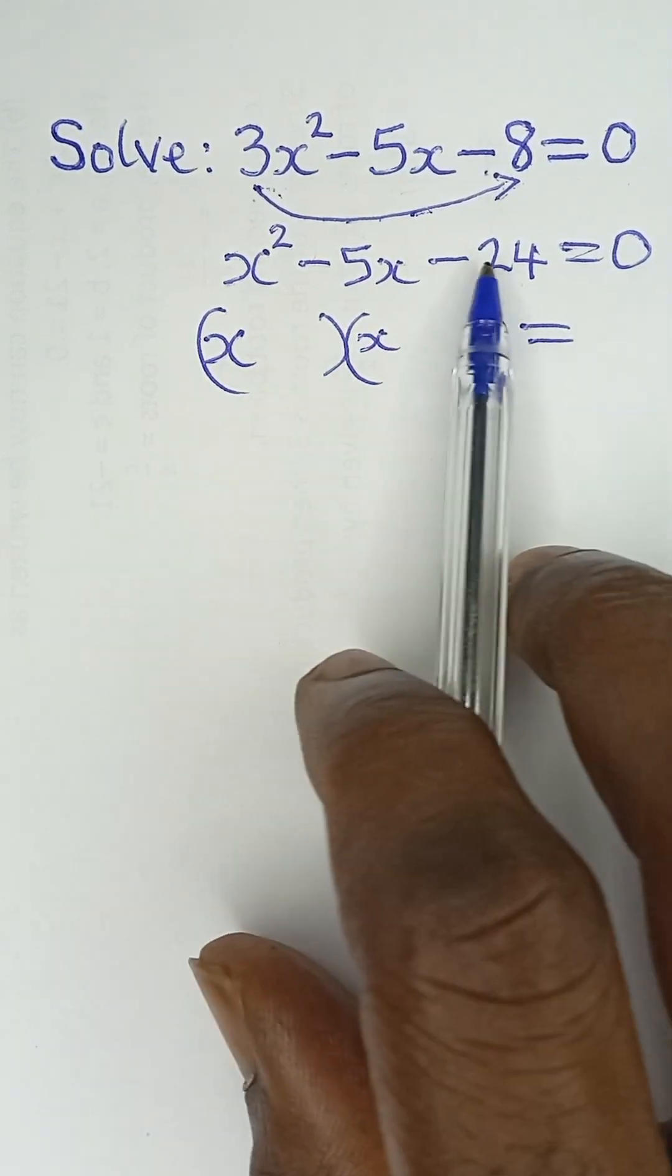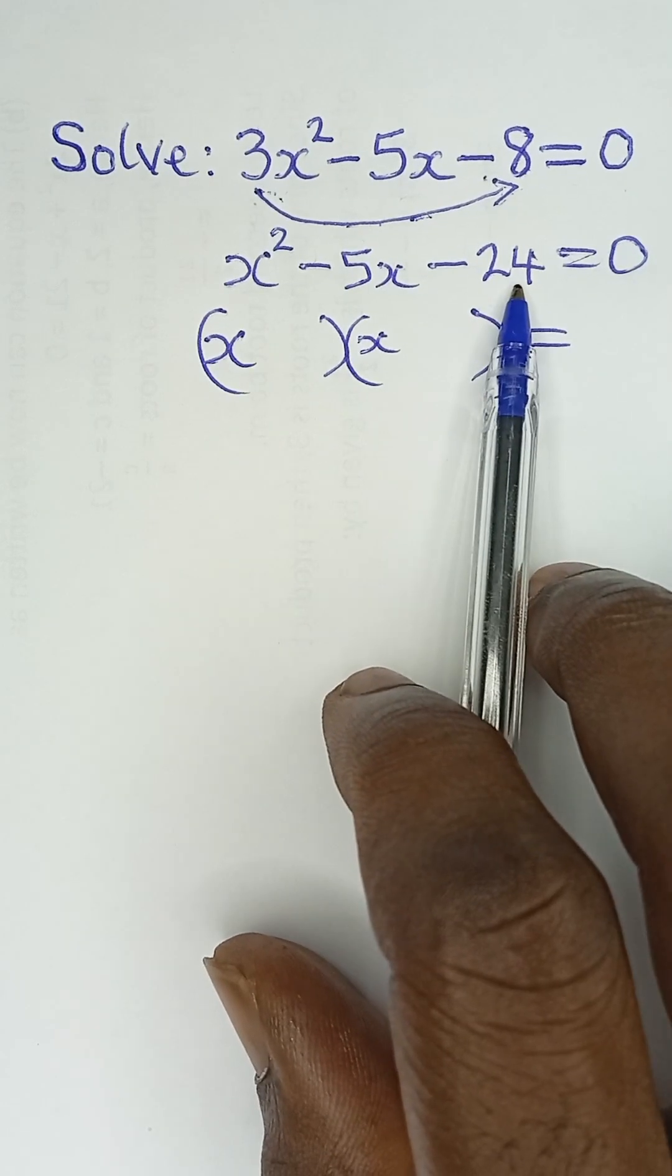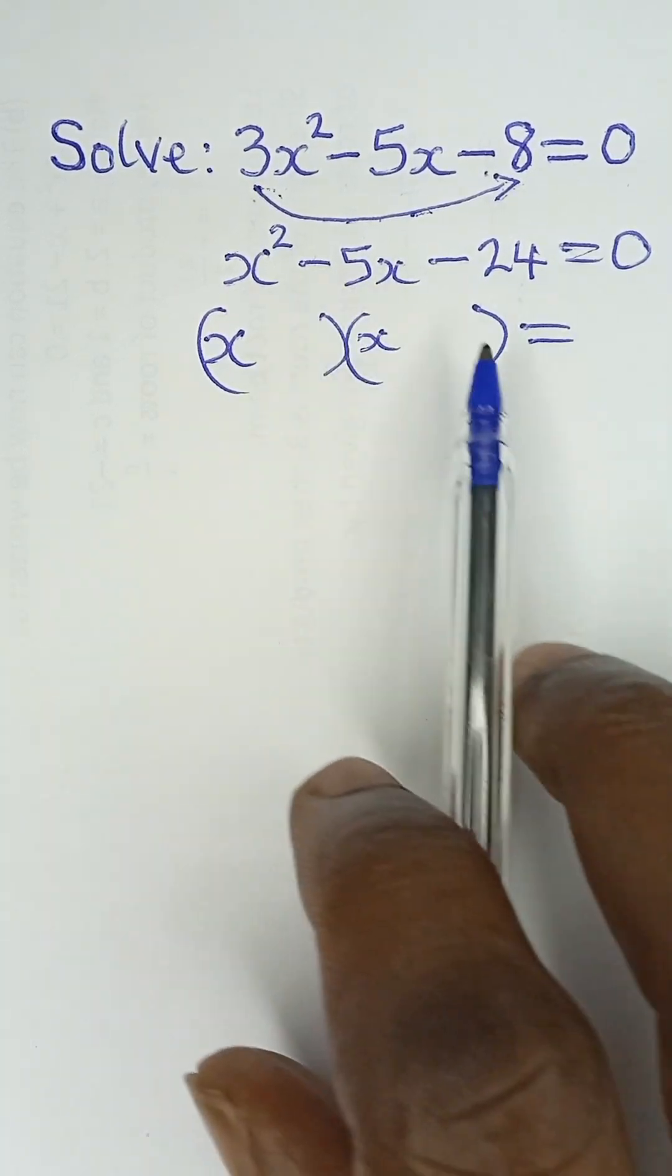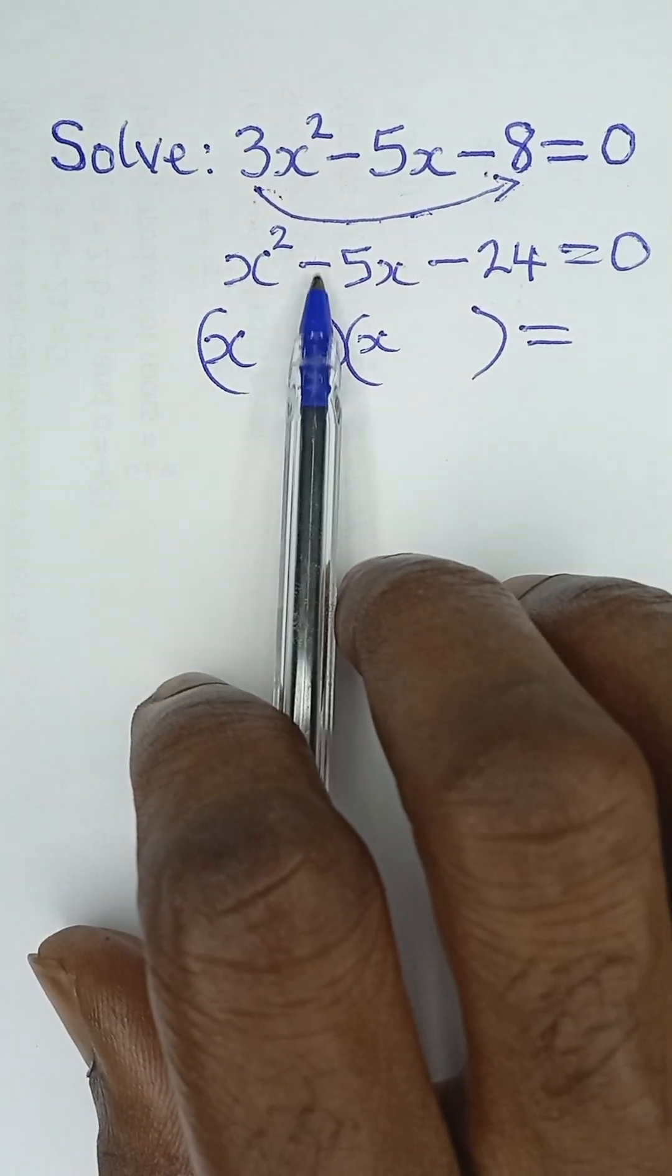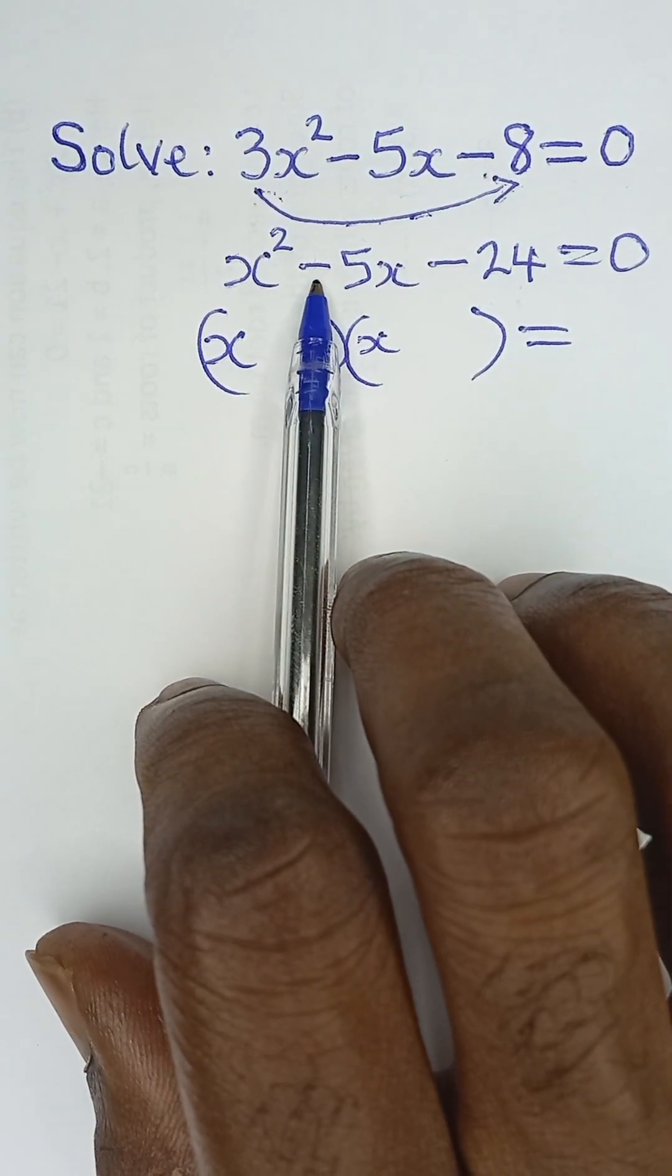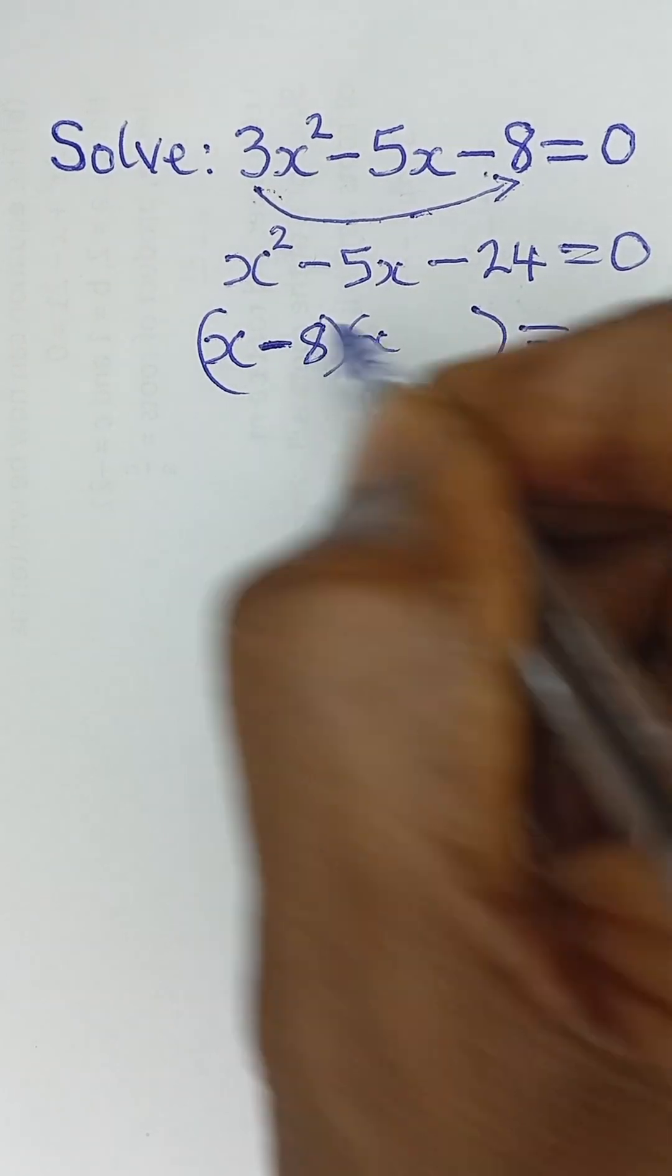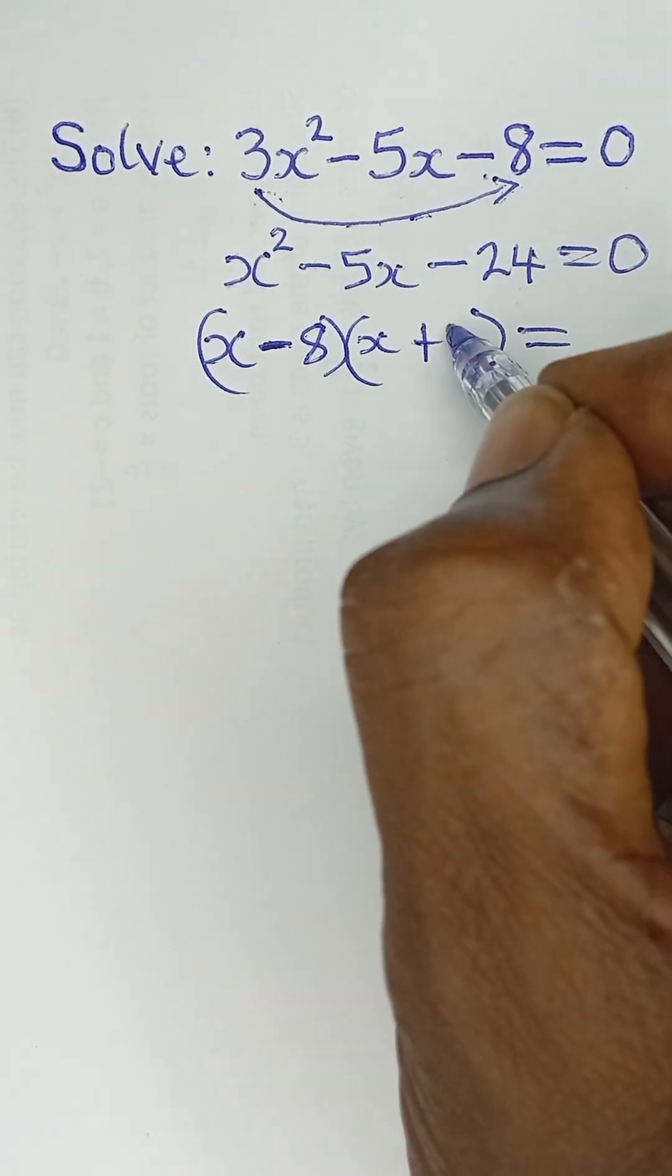So the two numbers, there's two factors of 24 to give us a sum of 5 should be 8 and 3. So we take 8 to be this negative sign here. And so that becomes negative 8 here and then positive 3.